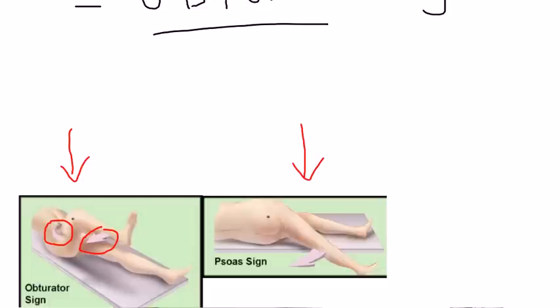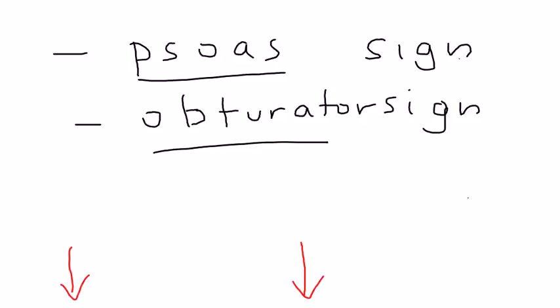The next one here is psoas sign. What you do is you get the patient to lie sideways and then you passively extend that right hip, and that stretches that muscle, the iliopsoas muscle, and that can cause tenderness and pain. So those two important physical diagnosis techniques can save you a lot of time.